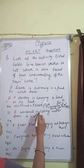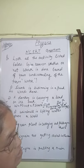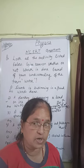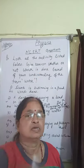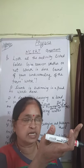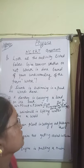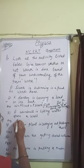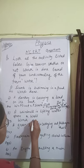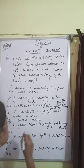Third: A windmill is lifting water from a well. It is applying force in the forward direction and displacement is also in the forward direction. That means work is done by the windmill. Please complete your answer by writing the reason.